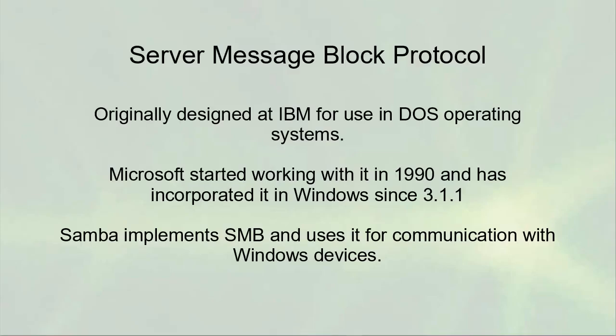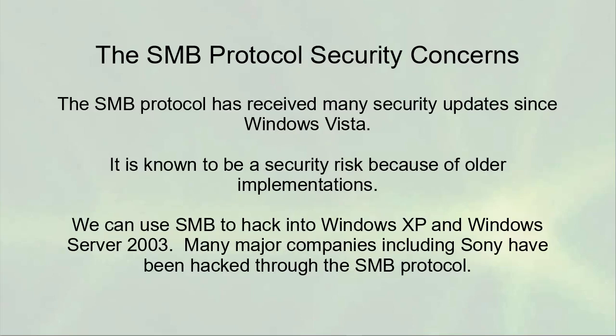Samba — the Server Message Block SMB protocol — was originally designed at IBM for use in DOS operating systems. Microsoft started working with it in 1990 and has incorporated it in Windows since Windows 3.11, which was Windows for Workgroups. The Samba package implements SMB and uses it for communication with Windows devices.